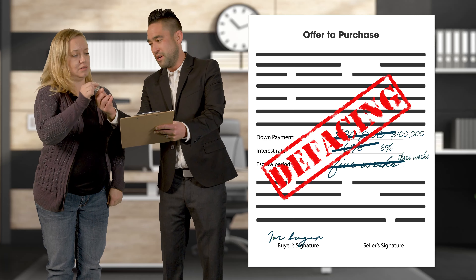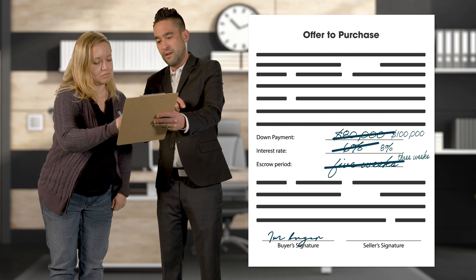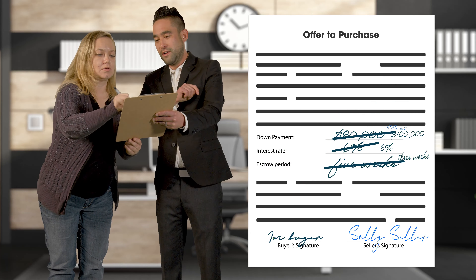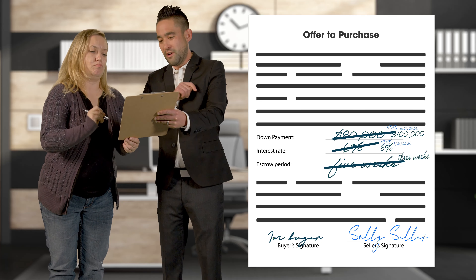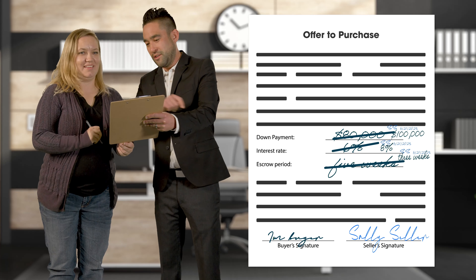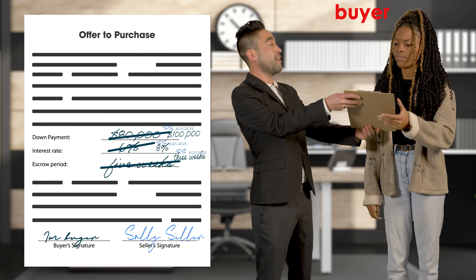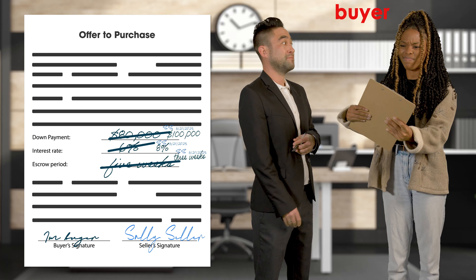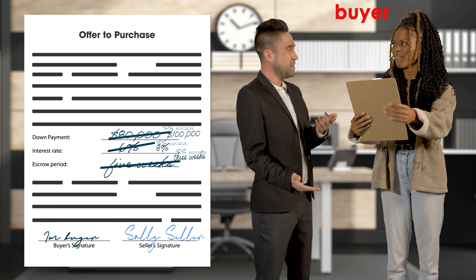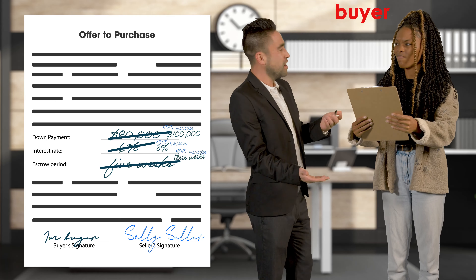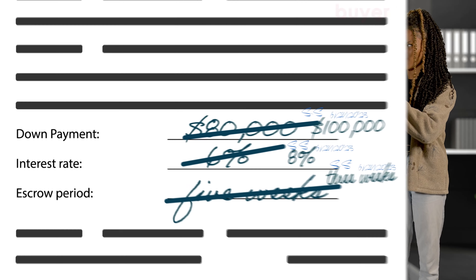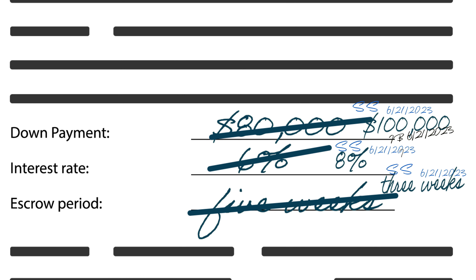The seller signs the form where it provides for the seller's signature and initials and dates all the changes — an improper technique referred to as change and initial. The original offer, as altered on its face, is then presented to the buyer for their approval. The buyer is instructed to indicate approval by also initialing and dating the changes to create a binding agreement. Simply chaos.